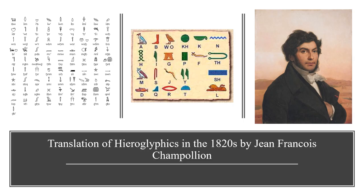Hieroglyphics were translated in the 1820s by Jean-François Champollion after the discovery of the Rosetta Stone during the Napoleonic Wars, which were fought between France and Great Britain, partially in Egypt. Champollion used the Greek alphabet to decode the meaning of the hieroglyphics.